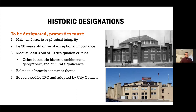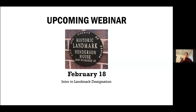In addition to maintaining integrity, properties have to be 30 years old — they can be younger, but if we are going to designate something less than 30 years old, it has to have exceptional significance. Then we have a series of 10 criteria, which cover history, architecture, geography, and culture, and a building has to meet three out of 10 of those criteria. Buildings or sites also have to relate to a historic context — we have to understand how the building fits into the larger history of Denver. Once someone has put together an application showing the building meets those four requirements, it's reviewed by the Landmark Preservation Commission, which makes a recommendation to city council. City council is actually the body that makes the final determination about whether or not a building should be a landmark. There will be a presentation if you want to learn more about designation on February 18th.